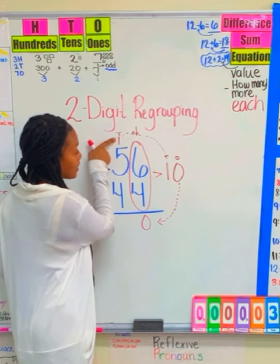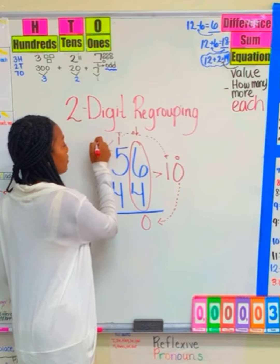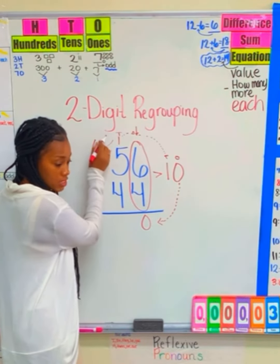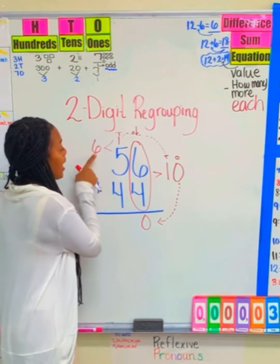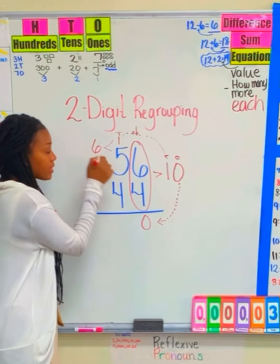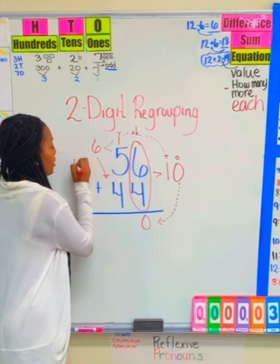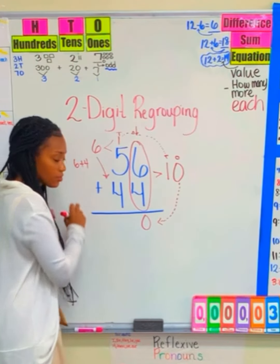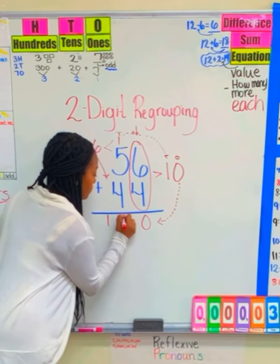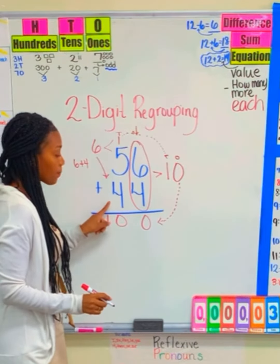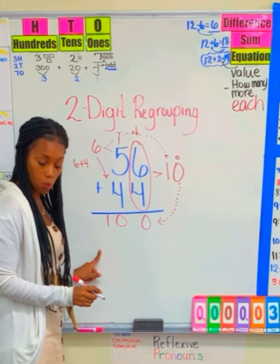I then need to add this one to this 5, which is 6, because 1 plus 5 is equal to 6. I will then take this 6 and I will add it with this 4. So 6 plus 4 again is 10. So 56 plus 44 comes out to be 100.